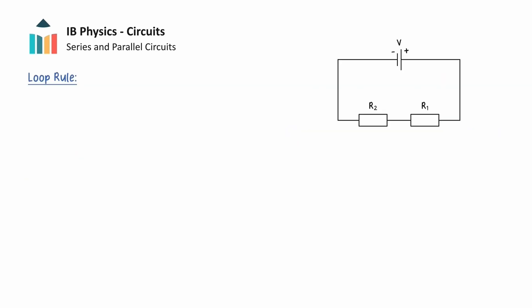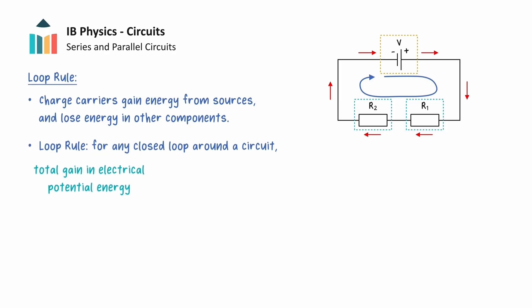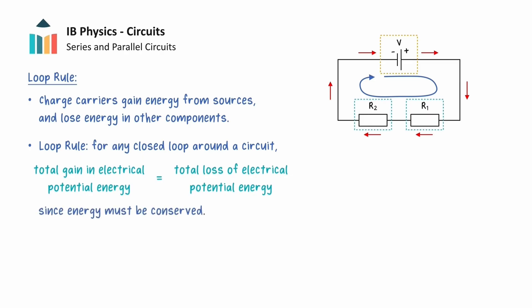Along with the junction rule, there is a loop rule which relates to the conservation of energy in the circuit. If we consider the following series circuit, the motion of charge carriers around the circuit occurs due to the potential difference between the terminals of the cell. Charge carriers gain energy from sources of potential difference because work is done on them, but charge carriers also lose energy in other components such as resistors because they do work on the components. The loop rule states that for any closed loop around the circuit, the gains in electrical potential energy of charge carriers from sources of potential difference must be equal to the total losses of potential energy by charge carriers in other components in the loop. This is because energy must be conserved, and there are no other ways for energy to be transferred into or out of the circuit.